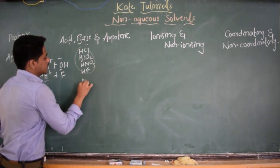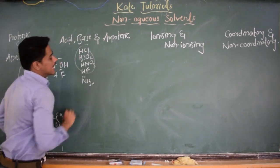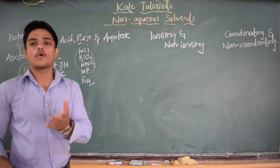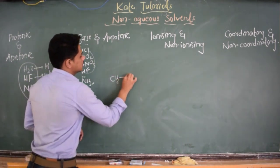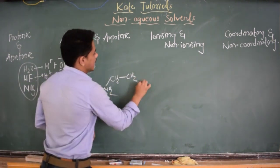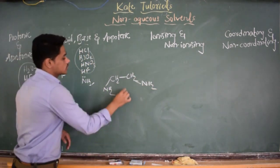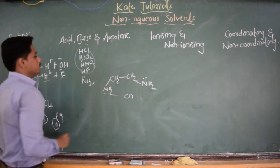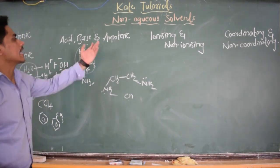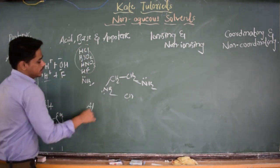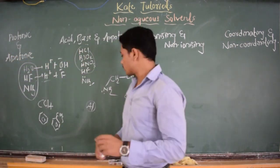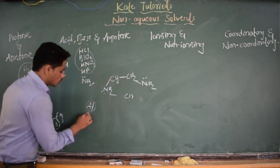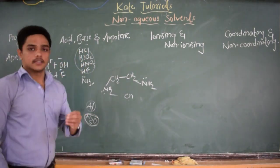For basic solvents, we can consider ammonia. Because of its lone pair of electrons, it acts as a Lewis base. Also, ethylenediamine — which we have studied in coordination chemistry, written in shortcut as 'en' — because of its two lone pairs of electrons, it also acts as a base. These are two examples of basic solvents. For amphoteric solvents, aluminium hydroxide when treated with water is amphoteric in nature — neither strictly acid nor base. And H₂O is also considered amphoteric in nature.